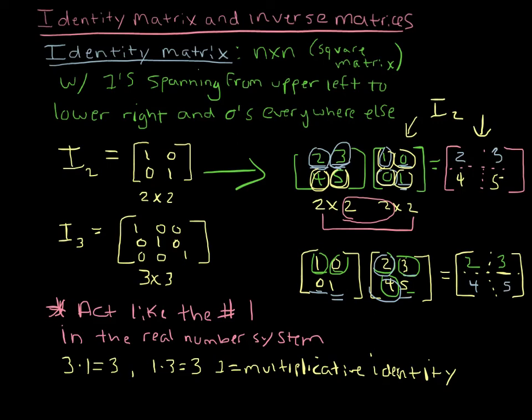Again, we multiply times the identity, and it just returned the same answer. So the identity matrix acts like the number 1 in our real number system.